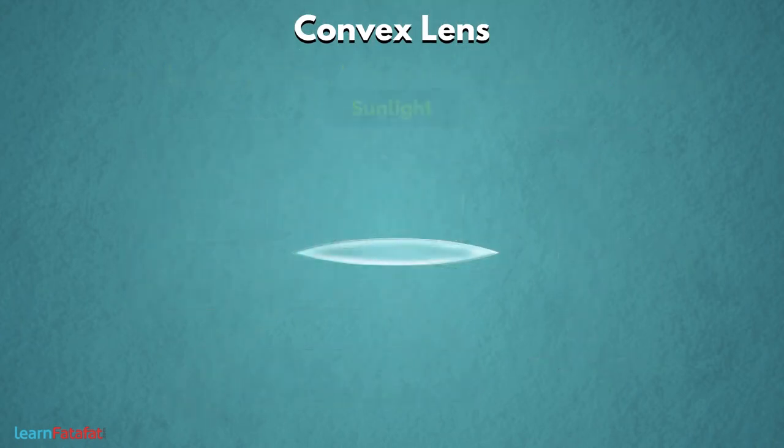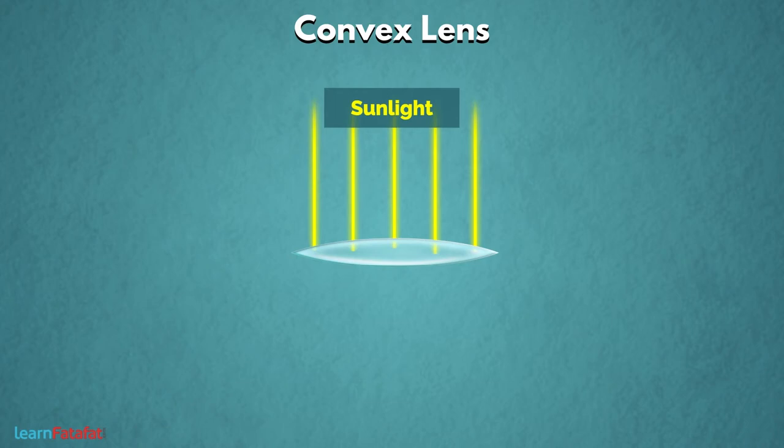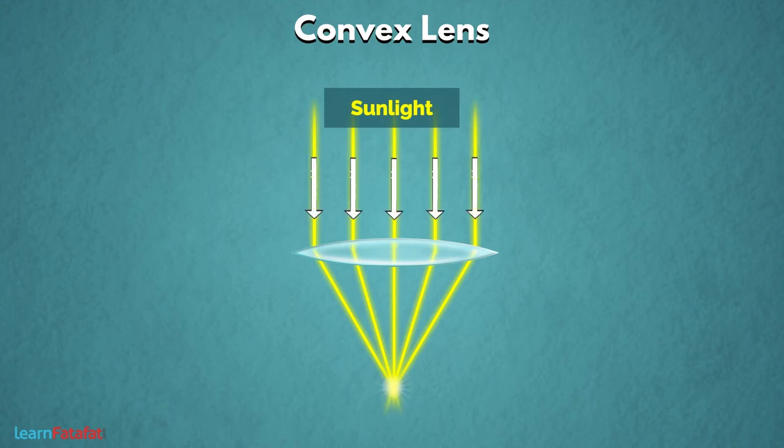ऐसे lens पर जब sunlight गिरती है तो हम उसे focus करके एक sharp dot obtain कर सकते हैं. इसका मतलब sun से आने वाले parallel rays convex lens से pass होते हैं और एक common point पर meet होते हैं.